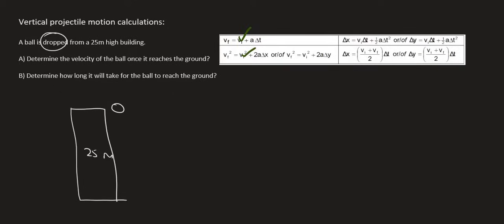So, we have the initial velocity. The final velocity is what we are looking for. Acceleration, remember, we always have that. That's always 9.8 down. And then the time we don't have. But what we do have is the distance. We can use this equation over here to work out the velocity once it hits the ground.